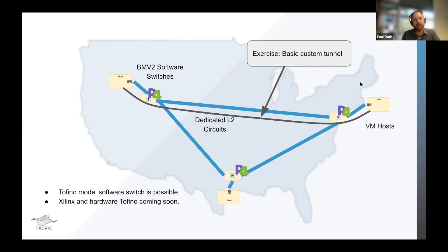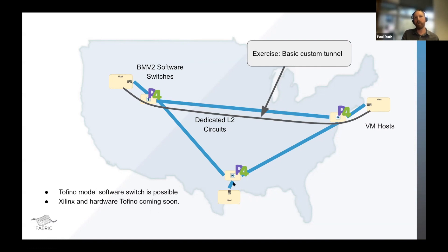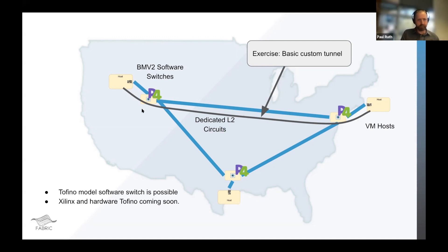This is pretty powerful and a good way for people to start learning P4 using these simple tutorials, as well as to learn about FABRIC and how to embed P4 into FABRIC eventually. The difference between using BMv2 software switches and the Xilinx or Tofino hardware is relatively small in terms of the Jupyter notebook and FABlib library needed to deploy them — you just change a parameter to switch the type. The Tofino model software switch is also possible, so if you have that code I can show you how to drop it in and run it with the same tutorials.